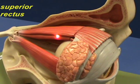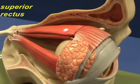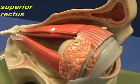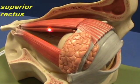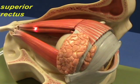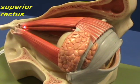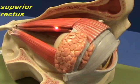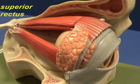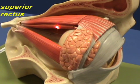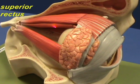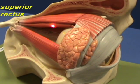The superior rectus muscle is directly underneath the levator palpebrae superioris. The superior rectus muscle has an origin on the superior part of the tendinous ring and inserts on the superior anterior half of the eyeball. The superior rectus muscle elevates, adducts, and medially rotates the eyeball.